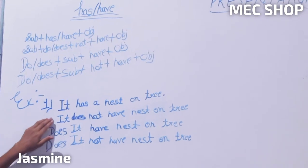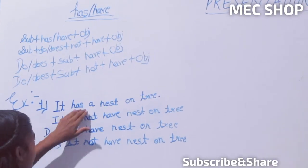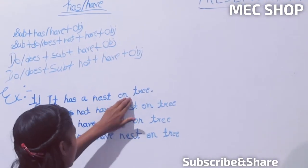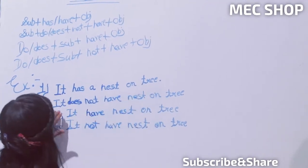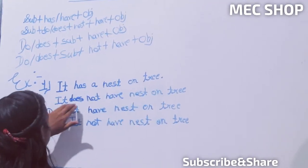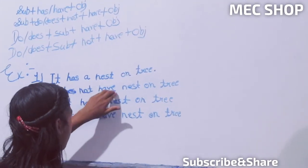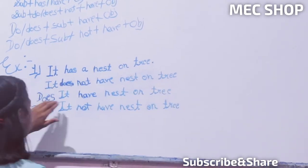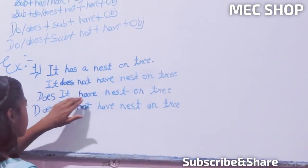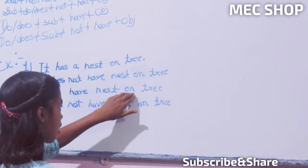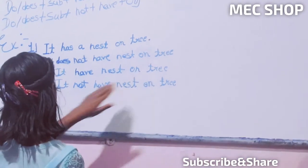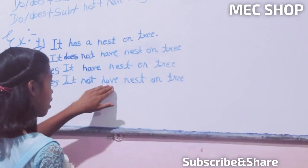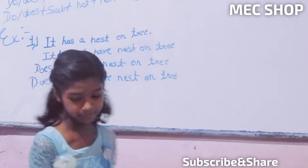Example first. It has a nest on tree. It does not have nest on tree. Does it have nest on tree? Does it not have nest on tree?